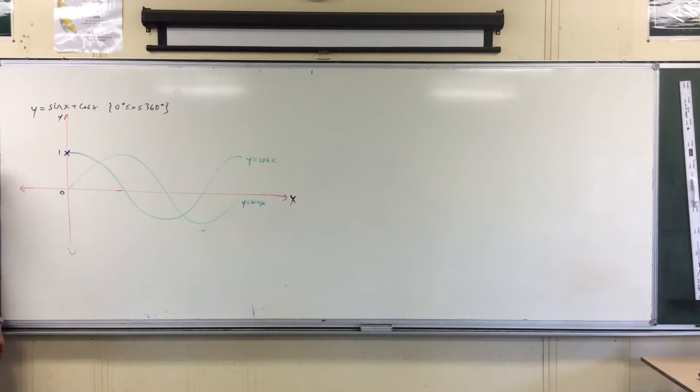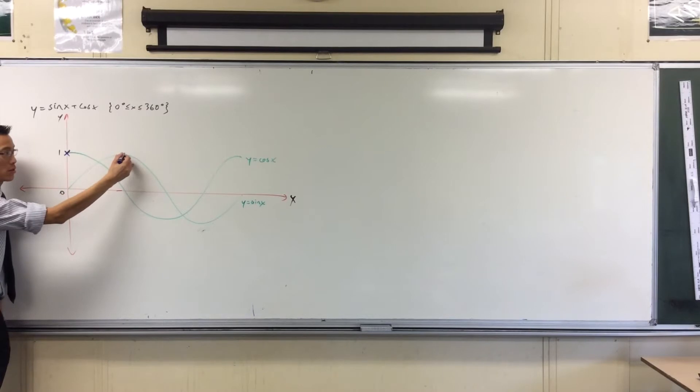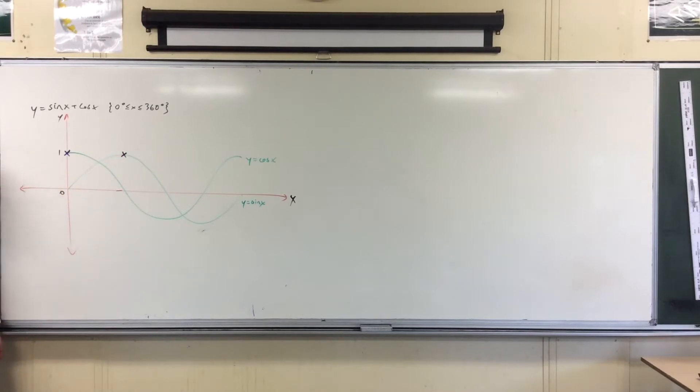For instance, cosine goes down here and it's 0. When x is equal to what angle? 90 degrees. It's 90 degrees there. And at the same point, because of this symmetry here, sine 90 is equal to 1. So I'm passing through there.